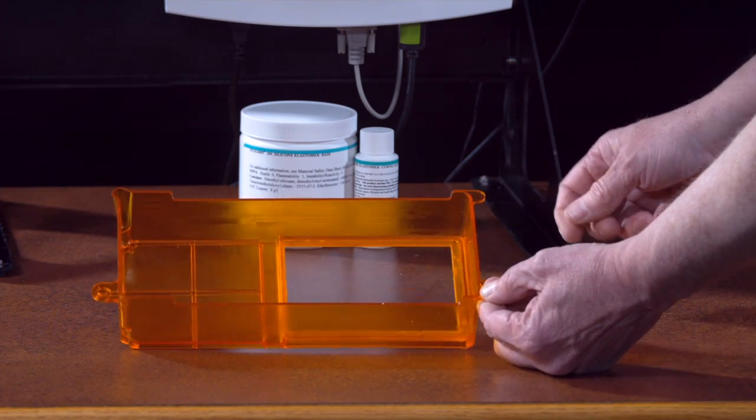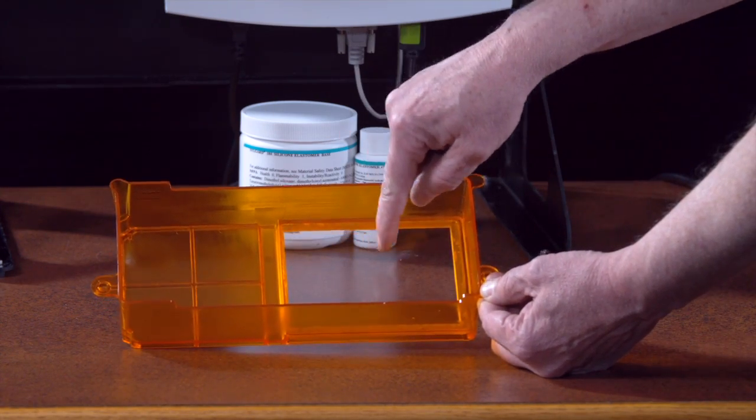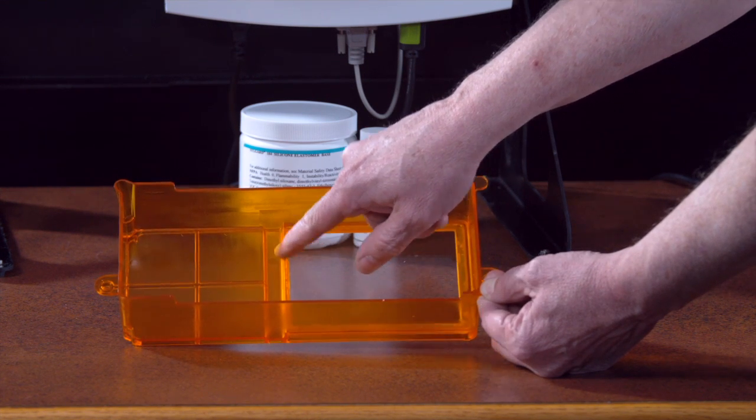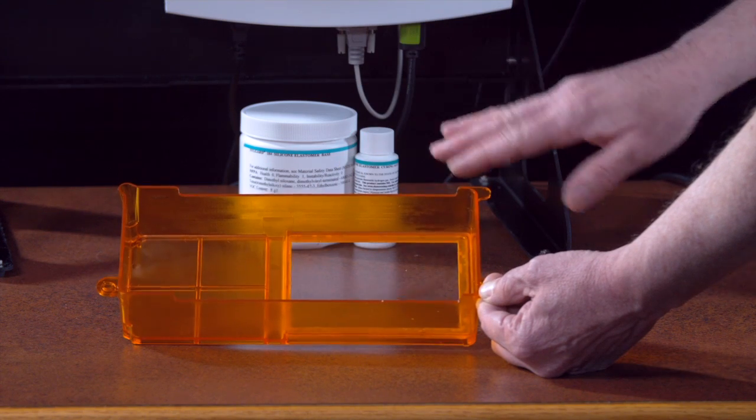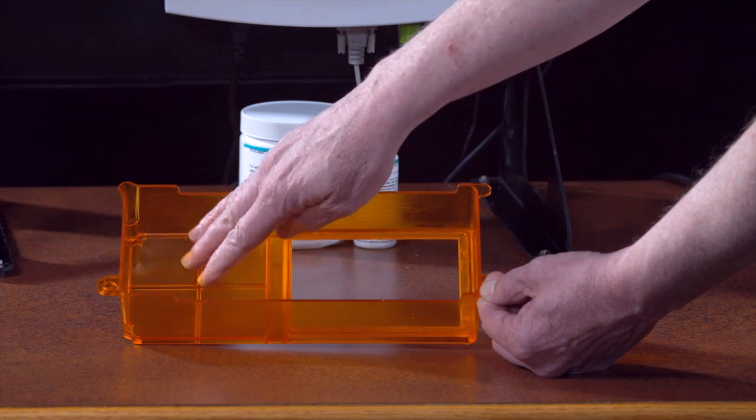Once you have that thoroughly mixed, you're going to want to pour it into the window side. And you'll notice there's a ridge or a dam right here. That's about an eighth inch tall. That will keep the PDMS from flowing into the other end.